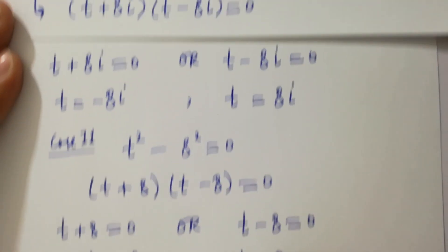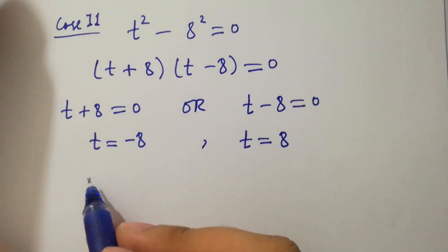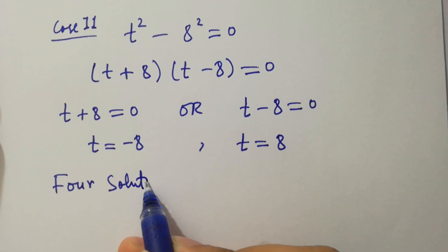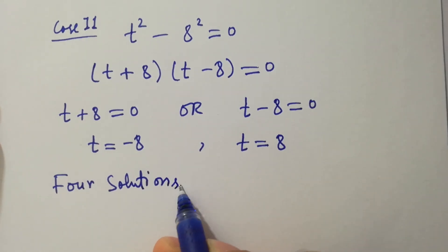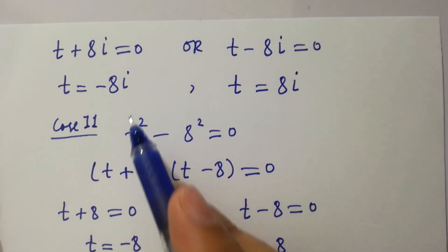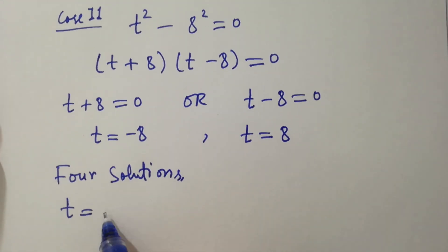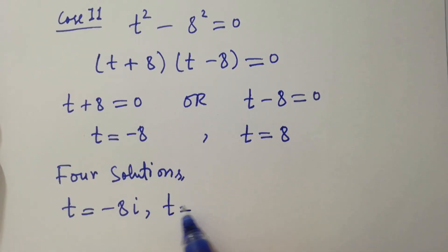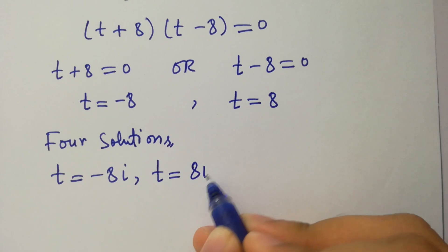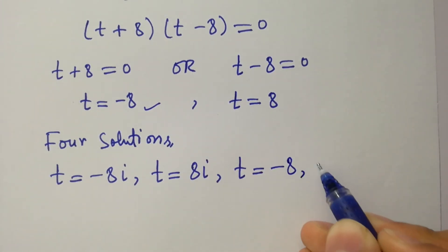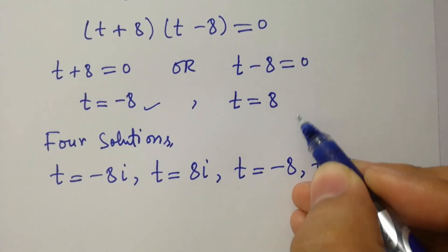We have four solutions here: t equal to minus 8i, t equal to plus 8i, t equal to minus 8, and t equal to plus 8.